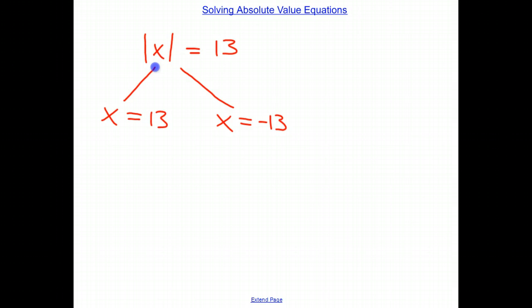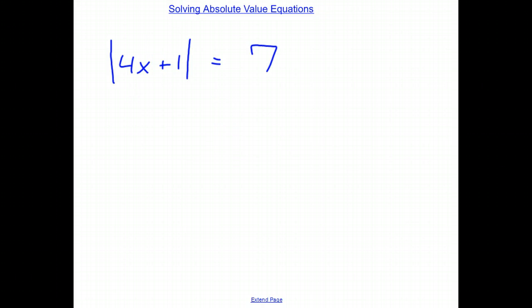Now let's try a little bit more of a challenging problem together. So now we're looking at the equation, the absolute value of the quantity 4x plus 1 is going to equal 7. So this is a little bit more complex than the problem we just looked at. Not too difficult, but it certainly is going to take a little bit more to solve. So just as we had done in the past, we're going to have to separate this problem into two different branches.